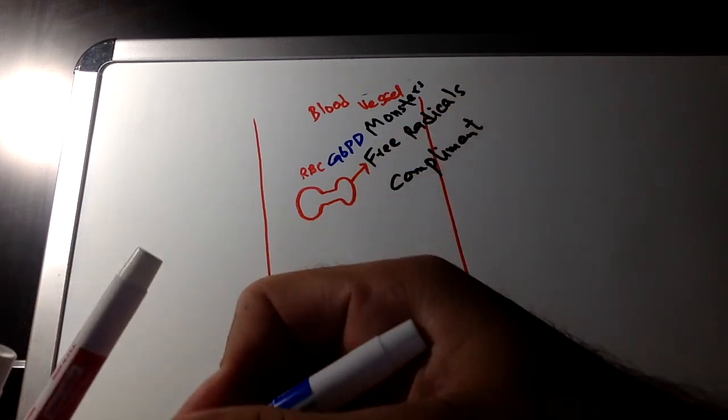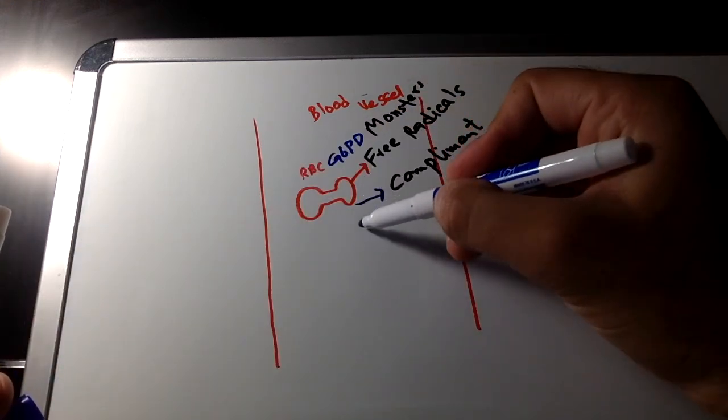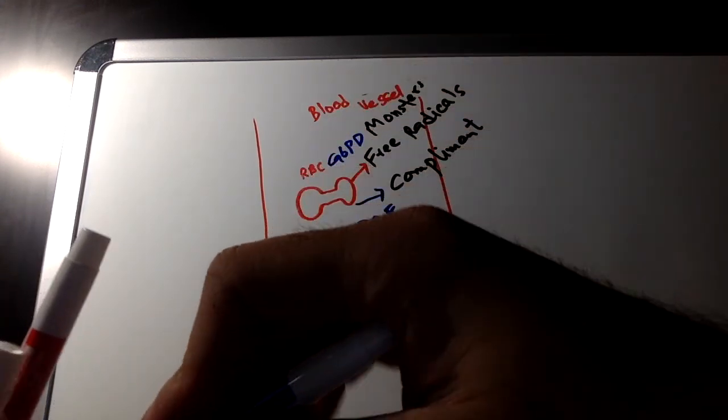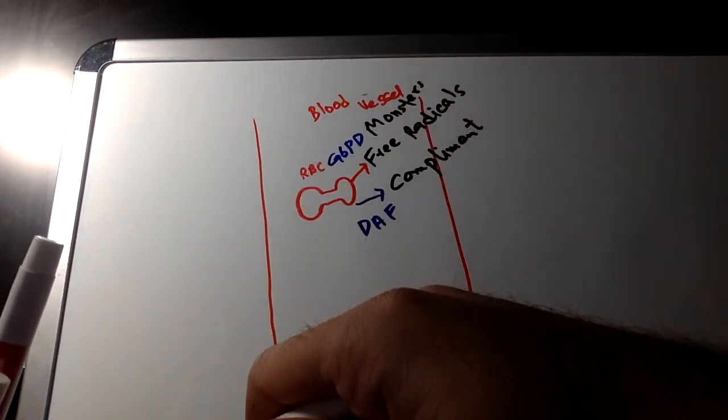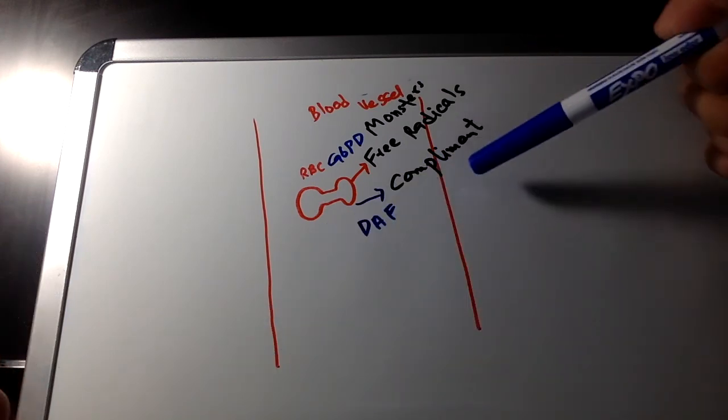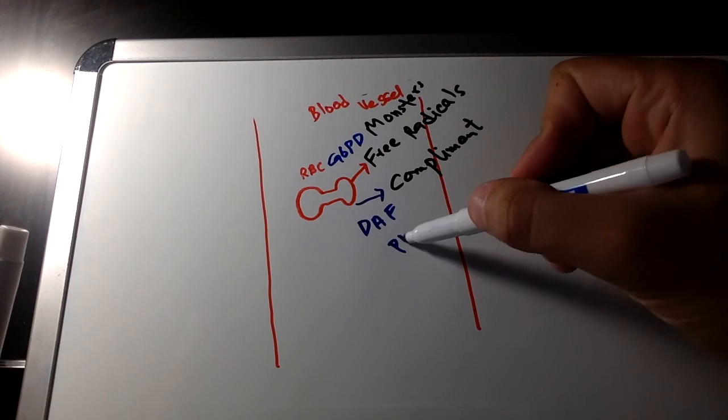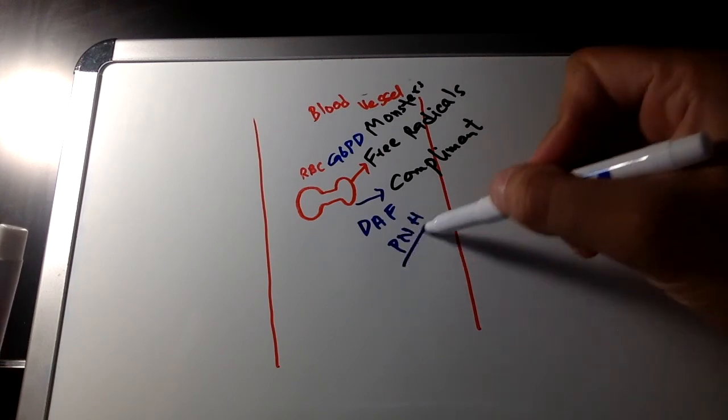And to protect RBC from complement, it has decay accelerating factor. If this is not there, then the problem that we get, we call it Paroxysmal Nocturnal Hemoglobinuria.